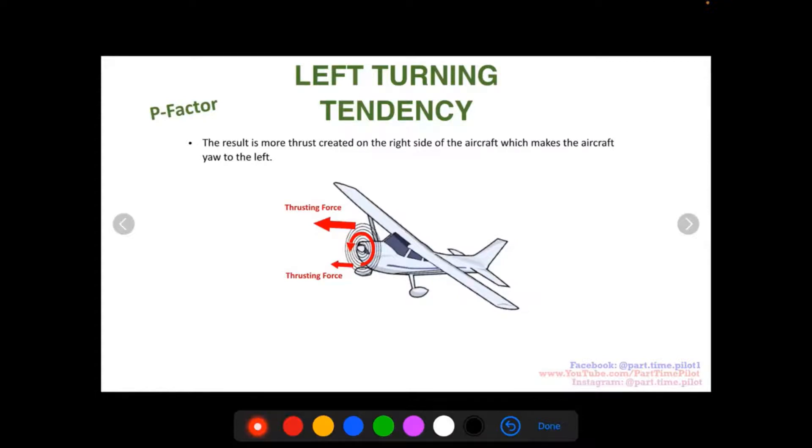So the result is more thrust, again, created on the right side of the aircraft, which makes the aircraft yaw to the left. So you get the propeller spinning this way, you have more thrust on this side, then on this side,